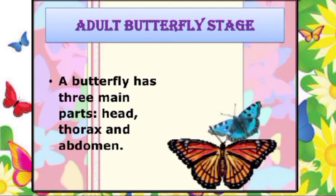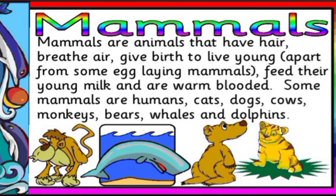The last stage is the adult butterfly stage. A butterfly has three main parts: head, thorax, and abdomen. The lifespan of most adult butterflies is about two to three weeks, though this can vary greatly among some species.